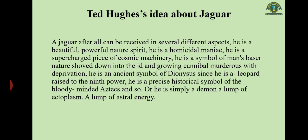The jaguar is also a precise historical symbol of the bloody-minded Aztecs — an ancient Mexican tribe — or simply a demon; a lump of ectoplasm; a lump of astral energy. So Hughes tries to give so many attributes to the jaguar that it resists any single definition. The jaguar refuses and exceeds any description — it is something impossible to define. This is what Hughes aims to convey.